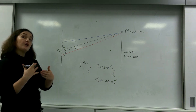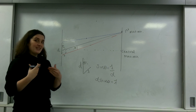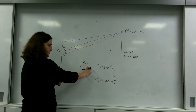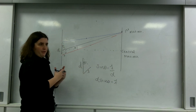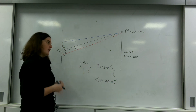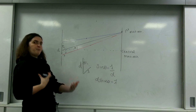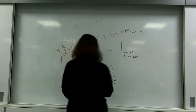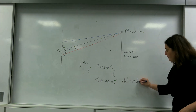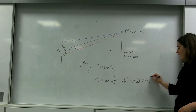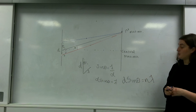This is for the first maxima. At the second maxima the path difference would be 2 lambda, the third would be 3 lambda, and so on. This leads us to the general formula: D sine theta equals n lambda. That is the formula on your data sheet.